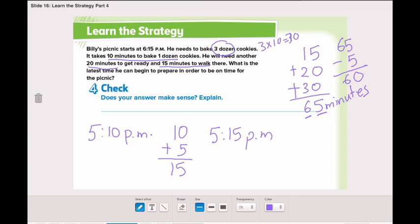So, 5 will be 6 and the minutes stay as is. So, it's 6:15 p.m. So, is 6:15 our ending time? Yes. Yes, the problem says that the picnic starts at 6:15 p.m.